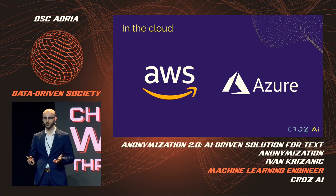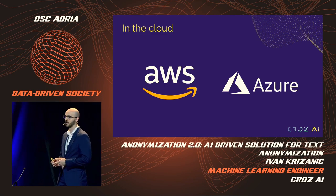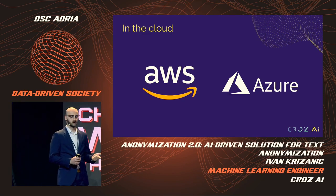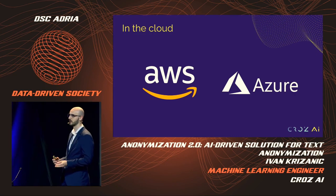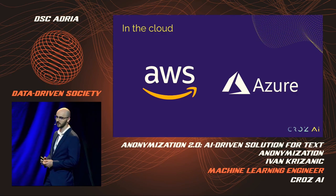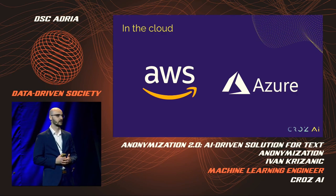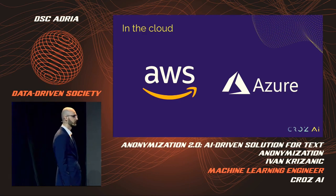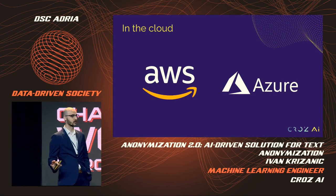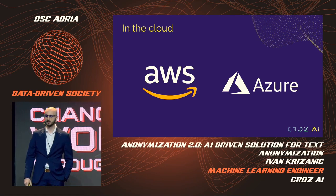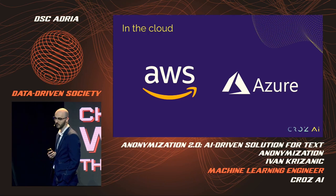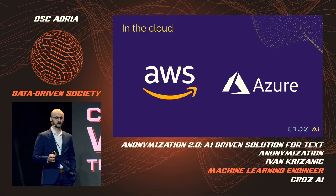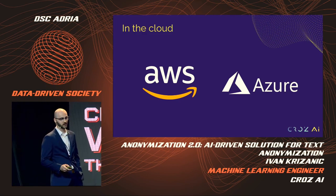When choosing the right cloud provider, there are many aspects to consider: cost, features, enterprise agreements, legal aspects, and so on. Initially, our client and we went with AWS and implemented almost everything there, but for some reasons we had to move completely to Microsoft Azure. Which, in the end, is a really good thing for us — because now we can say that we have this amazing anonymization solution running on two major cloud providers: both AWS and Microsoft Azure.